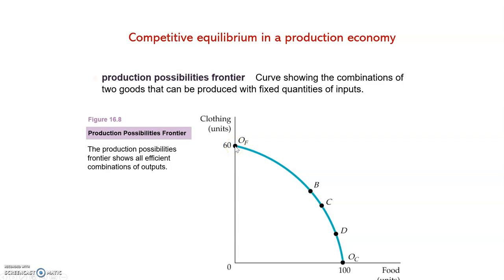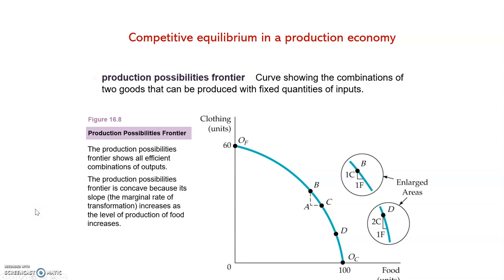One extreme point represents the case where only clothing is produced, while OC is the other extreme where only food is produced and no clothing. Points B, C, and D are other points that come from the contract curve. Another interesting characteristic of the production possibilities frontier is that it is concave. It is concave because its slope increases as the level of production of food increases — so when we have more food and less clothing, the slope is increasing, as we can find here.